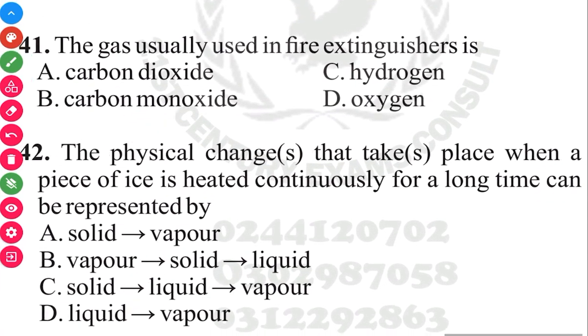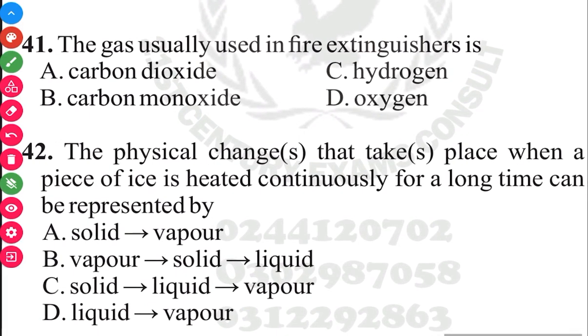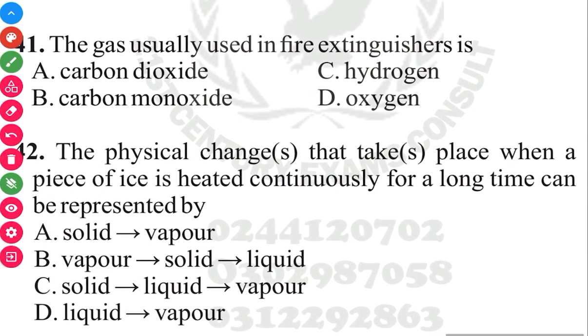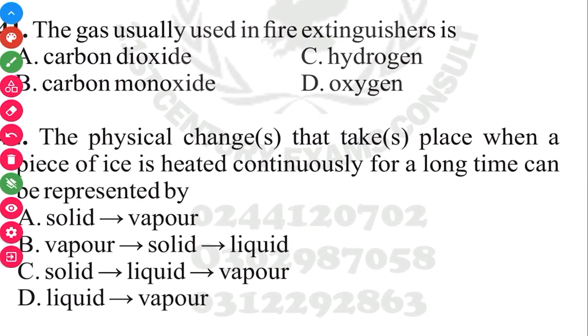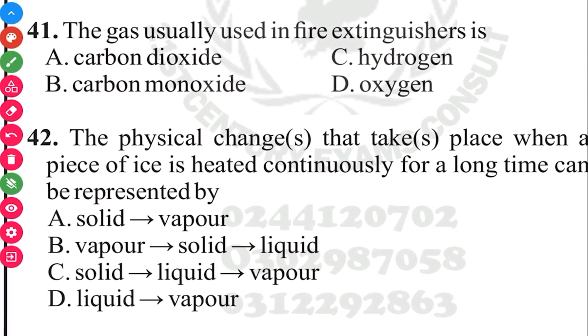The physical changes that take place when a piece of ice is heated continuously for a long time can be represented by solid to liquid to vapor. The answer in 3, 2, 1 is C. First changes from solid, which is the ice, to liquid. Then the liquid changes to vapor.